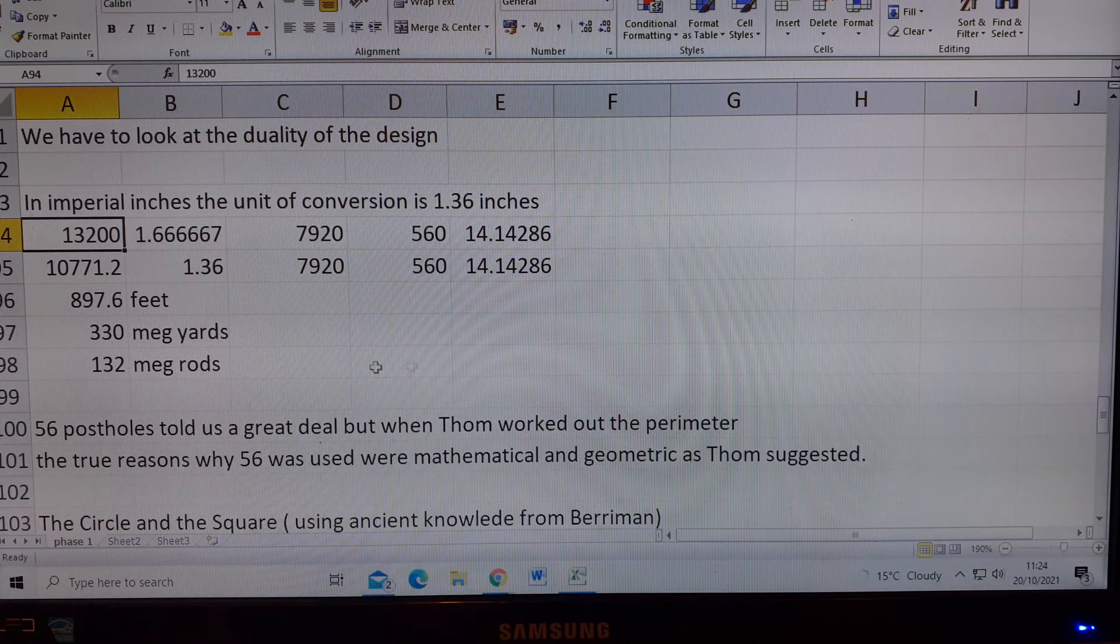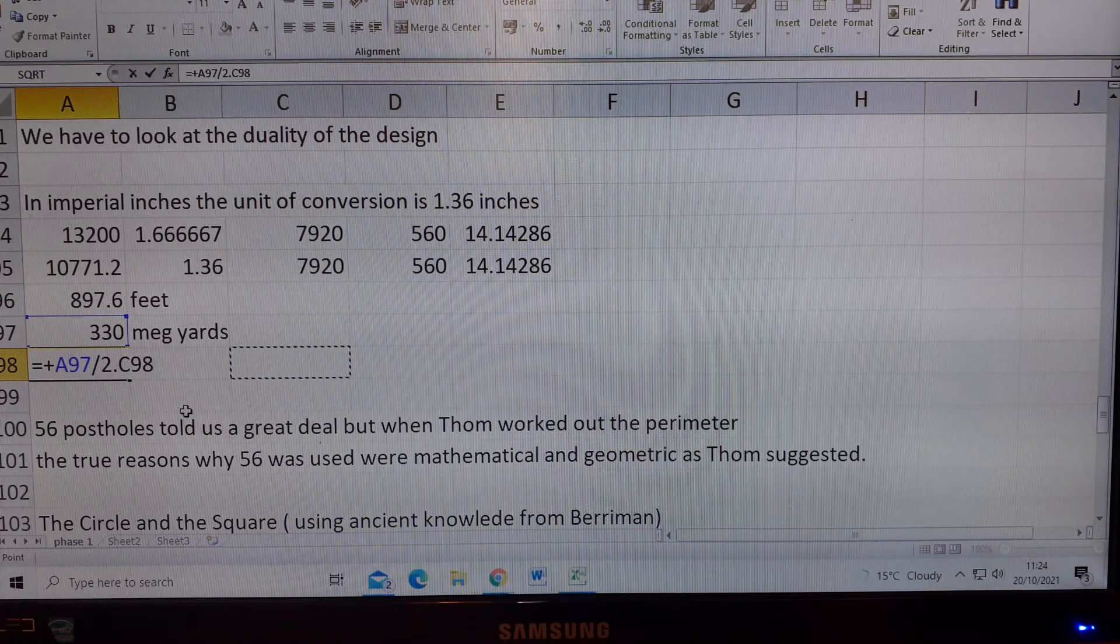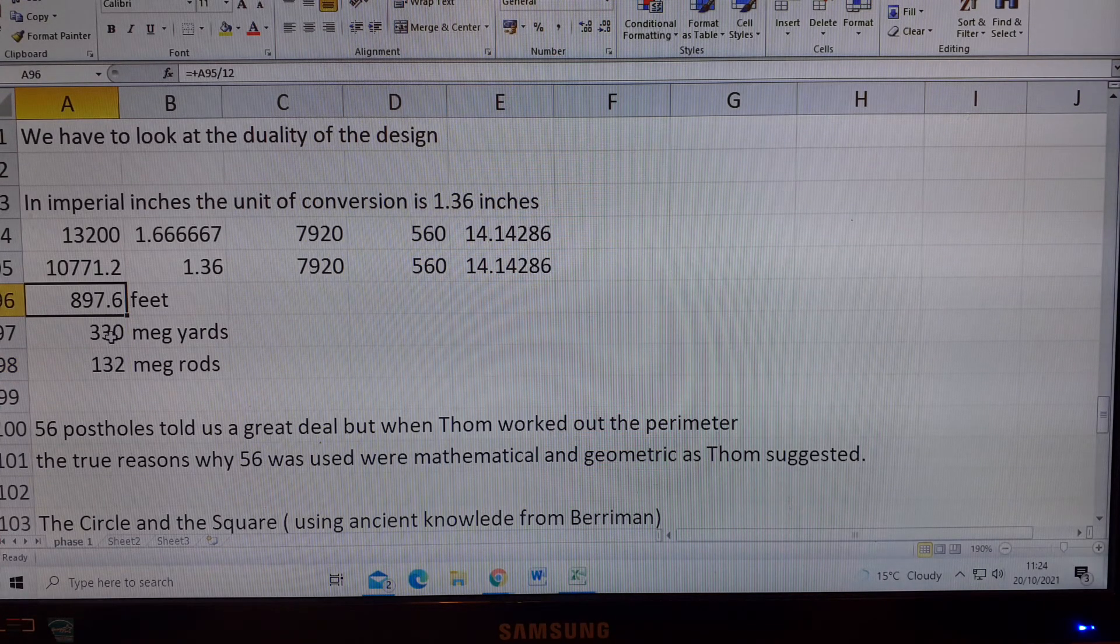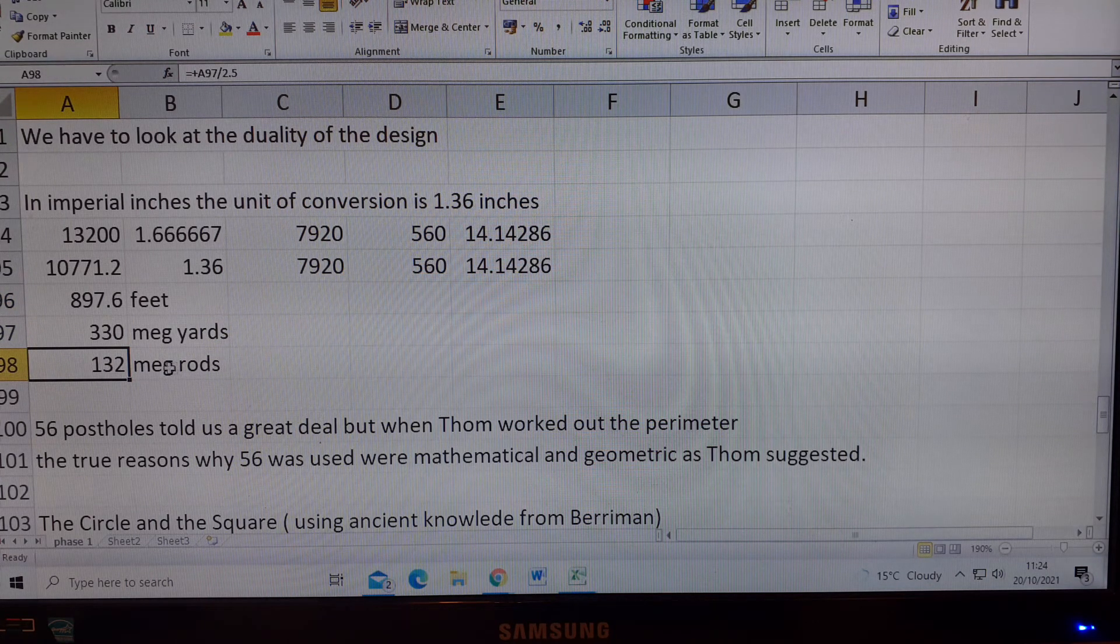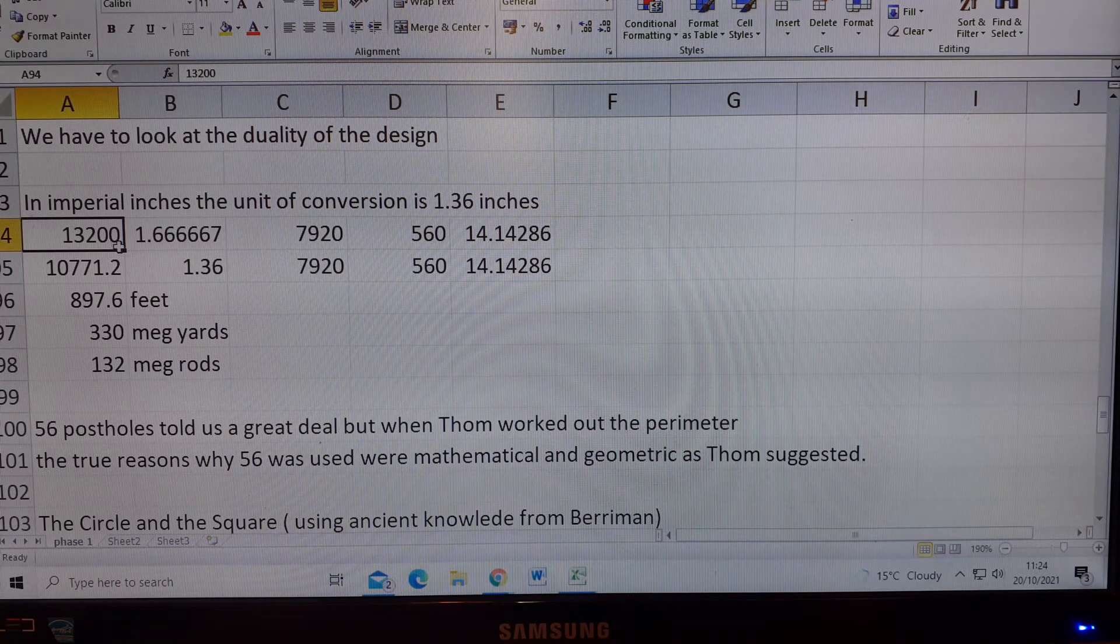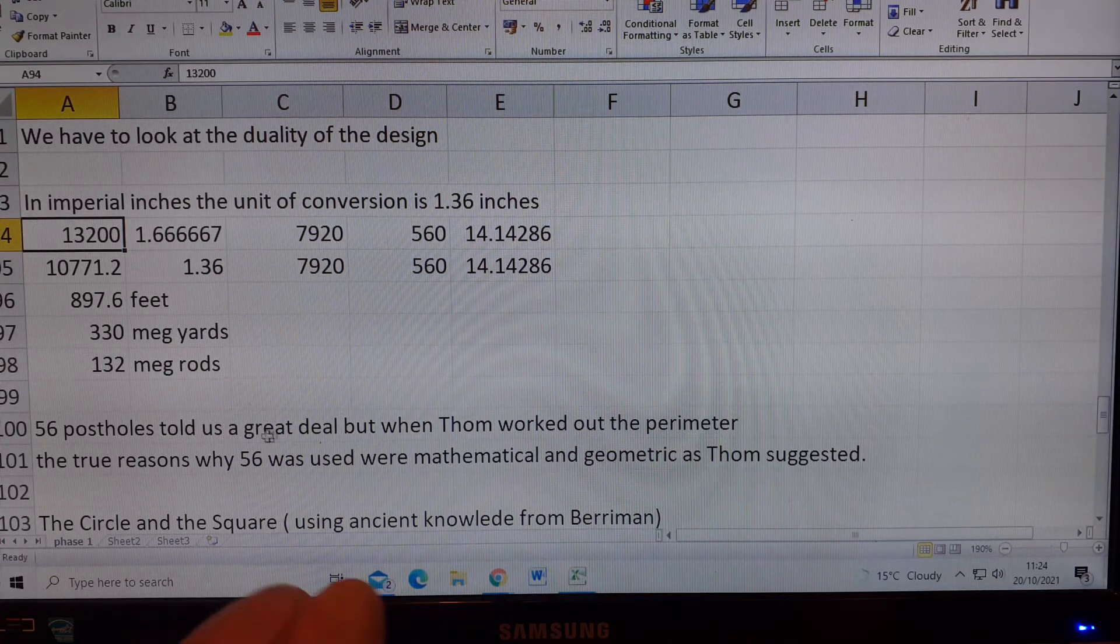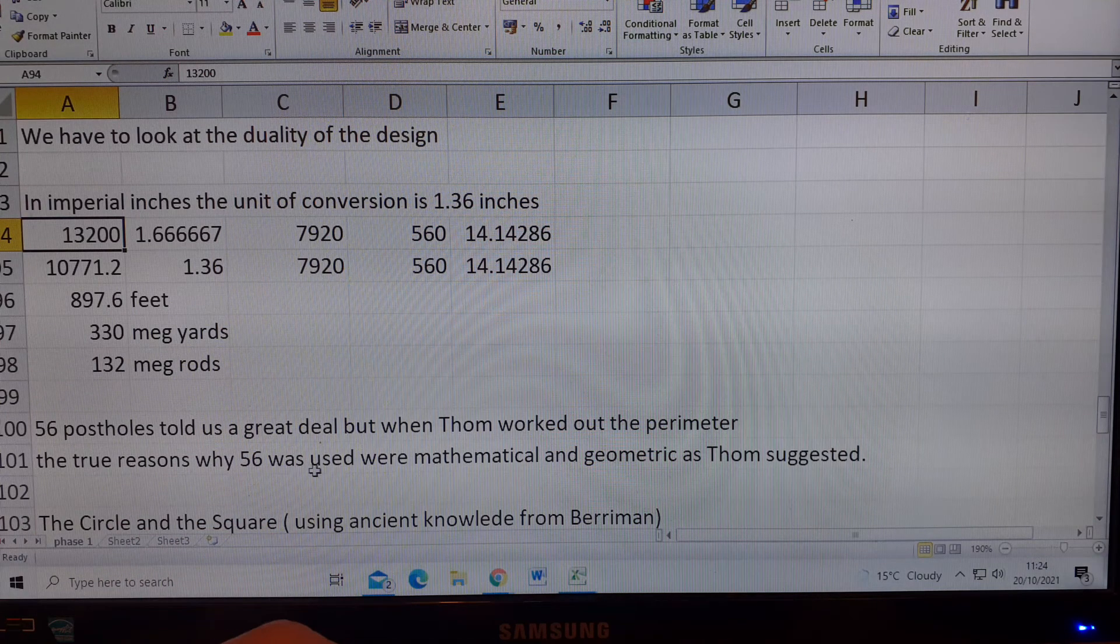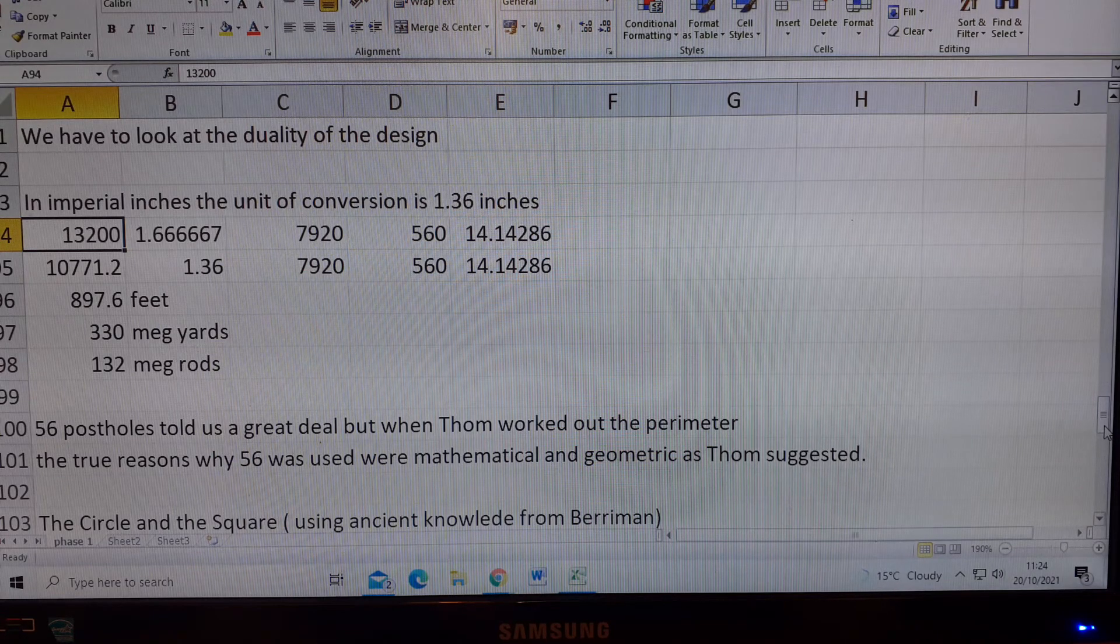Interestingly, we can also show that 897.6 feet in megalithic units is 330 megalithic yards, 132 megalithic rods, and Tom tells us there's 100 megalithic inches in a megalithic rod, and it's there. So I'm saying 56 post holes told us a great deal, but when Tom worked out the perimeter, the true reasons why 56 was used were mathematical and geometric, as Tom suggested, and now we can see that.